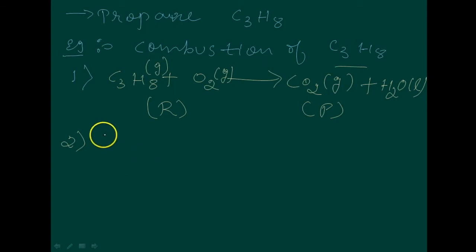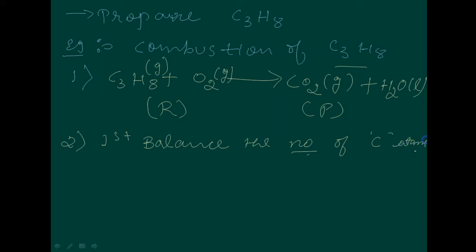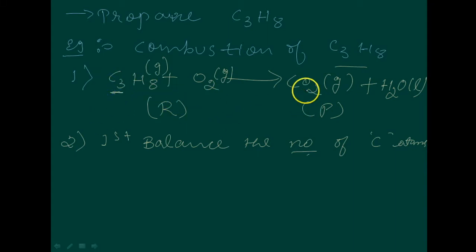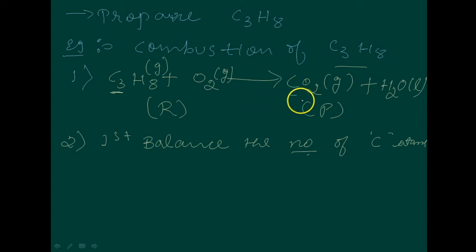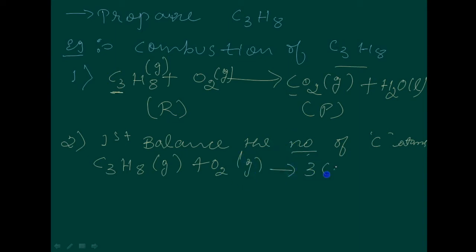Step 2: Balance the number of carbon atoms first. Here, C₃H₈ has 3 carbon atoms but CO₂ has only 1. So multiply CO₂ by 3 to get equal carbon atoms. The equation becomes: C₃H₈ + O₂ → 3CO₂ + H₂O.